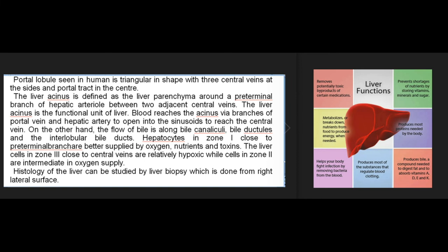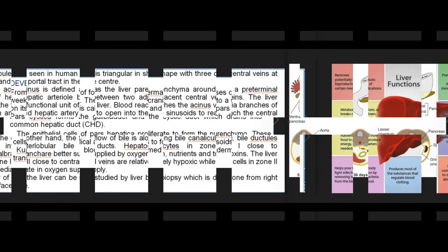Blood reaches the acinus via branches of the portal vein and hepatic artery to open into the sinusoids to reach the central vein. Bile flows along bile canaliculi, bile ductules, and the interlobular bile ducts. Hepatocytes in zone 1 (close to the preterminal branch) are better supplied with oxygen, nutrients, and toxins. Cells in zone 3 (close to central veins) are relatively hypoxic; cells in zone 2 are intermediate. Liver histology can be studied by liver biopsy done from the right lateral surface.